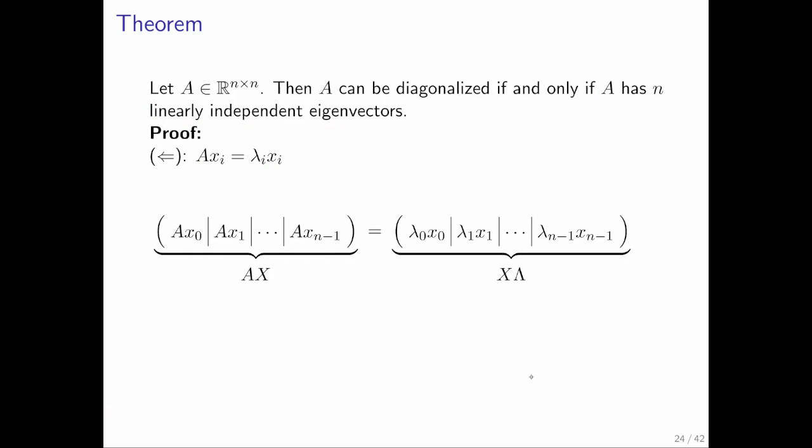What we can do then is collect all n of these as the columns of the matrix on the left here, and all n of these as the corresponding columns on the right. And notice that if you have equality here, it means that this column is equal to that column, and so on. And that all comes from this.